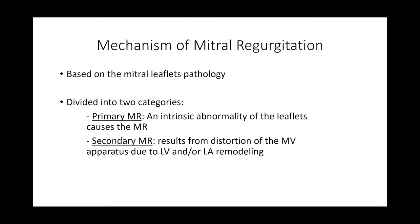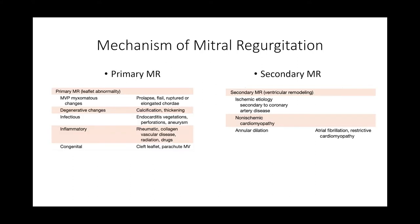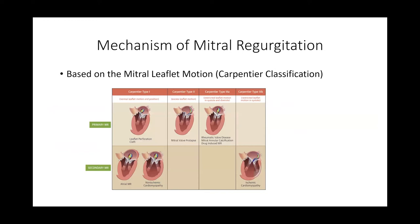In primary MR, any degenerative, myxomatous disease, prolapse, flail, infection, inflammation, or congenital problems can be the cause. In secondary MR, it's ventricular remodeling — ischemic cardiomyopathy, non-ischemic, or volume overload dilatation such as AF and restrictive cardiomyopathy. The second classification uses mitral leaflet motion — the Carpentier classification.